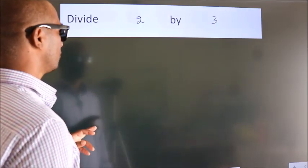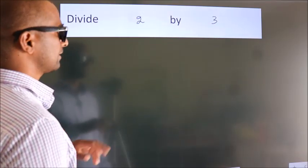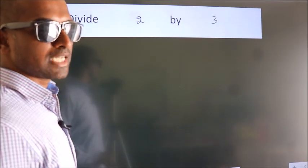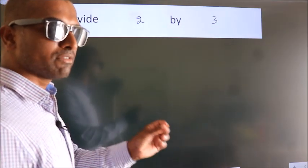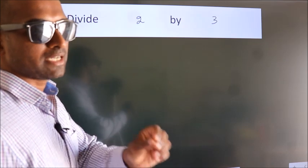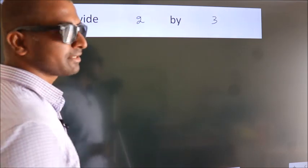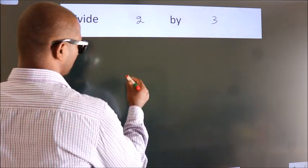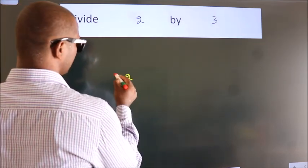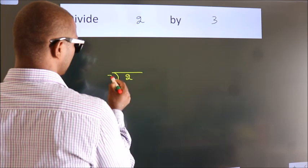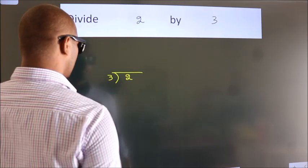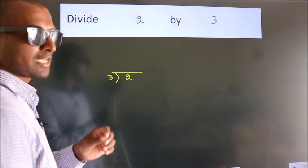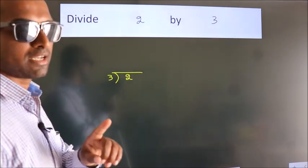Divide 2 by 3. To do this division, we should frame it in this way: 2 here, 3 here. This is your step 1.